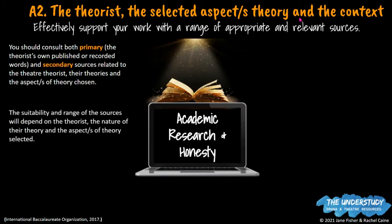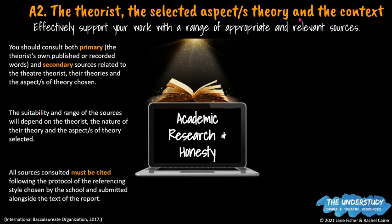The suitability and range of sources depends on your theorist. Some theorists were recorded extensively in documentaries, videos, interviews, or wrote books themselves — so you may find many primary resources. Other theorists may have fewer primary sources, but there should be a balance between primary and secondary. All sources must be cited using APA referencing, as we use at AIS. That includes books, websites, videos, DVDs, articles, live lectures, interviews, and performances if the theorist directed something that was filmed.